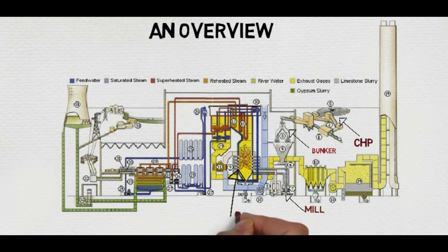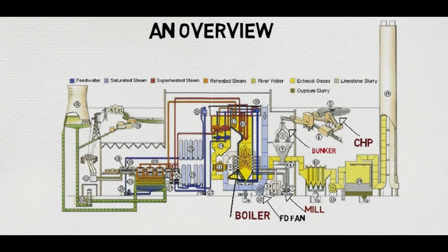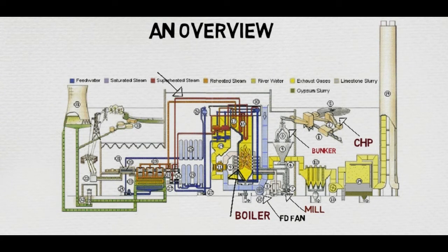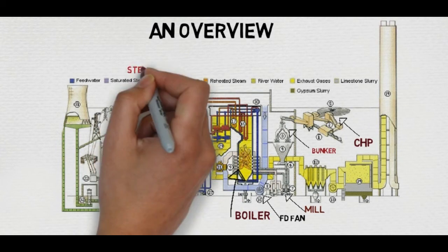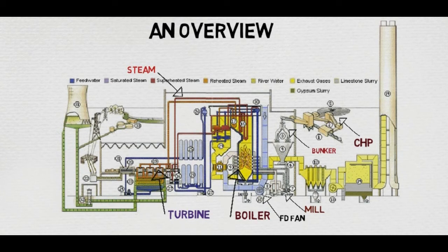This is a boiler where the coal is burned. This is the FD fan, which is a forced draft fan used to provide air into the boiler for combustion. The water is thus converted into steam and fed to the turbine, which the turbine rotates.